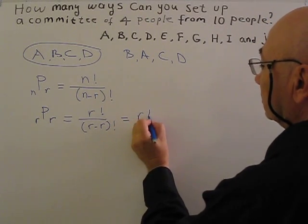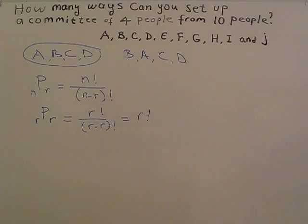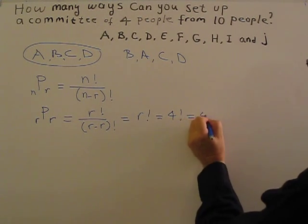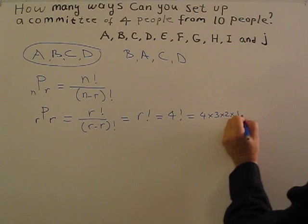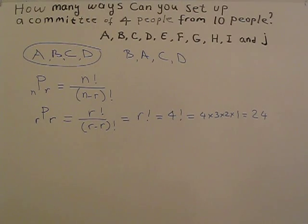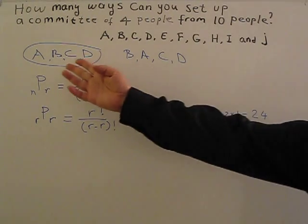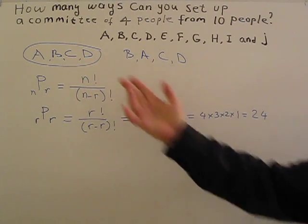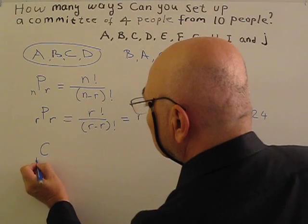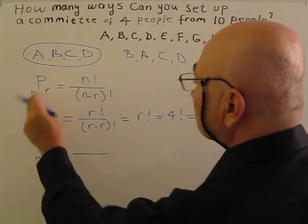Basically, R factorial. In our case, four factorial, so four times three times two times one will be 24 ways. So for these four A, B, C, D people, we have 24 ways for permutation, but in combination there are only one. So basically, what I get? Combination formula must be this divided by this.